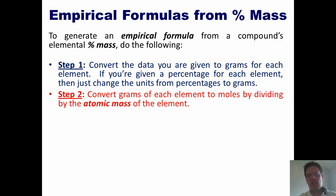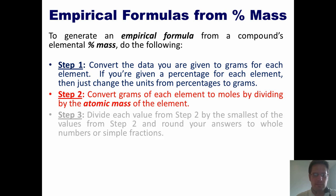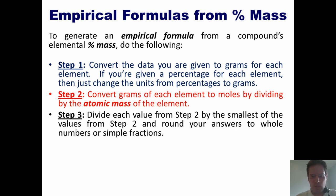Two, convert grams of each element to moles by dividing each of the amounts that you calculated in step one by the atomic mass of each element. Three, divide each value you got in step two by the smallest number you got in step two, and then round all the answers to the nearest whole number or simple decimal point or fraction.